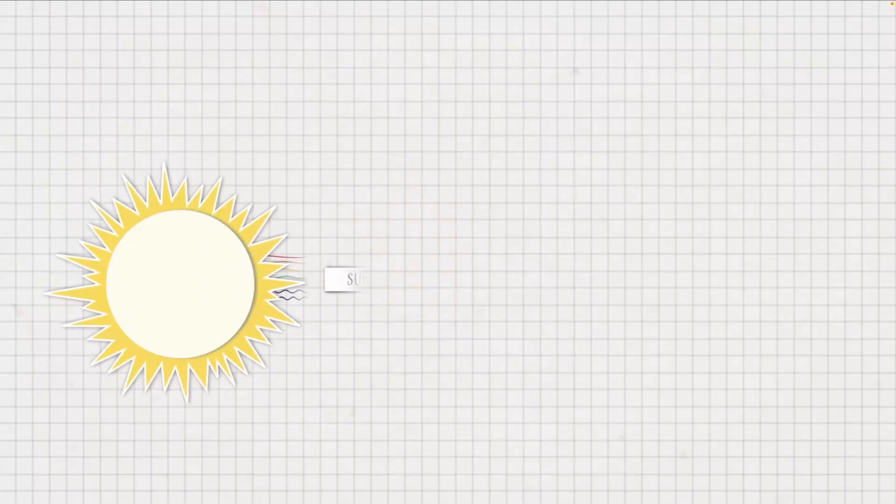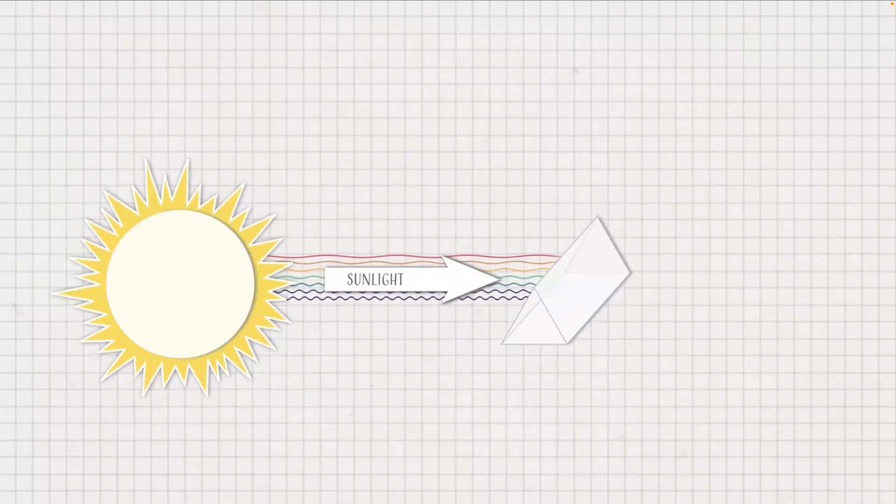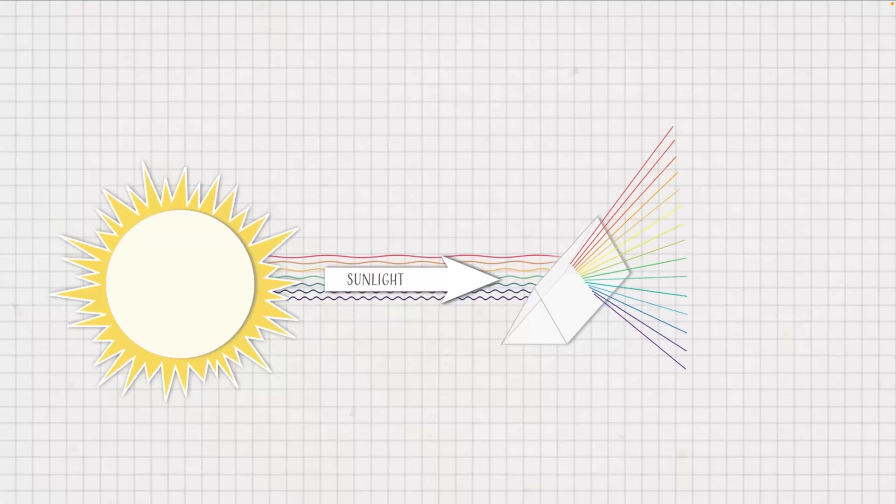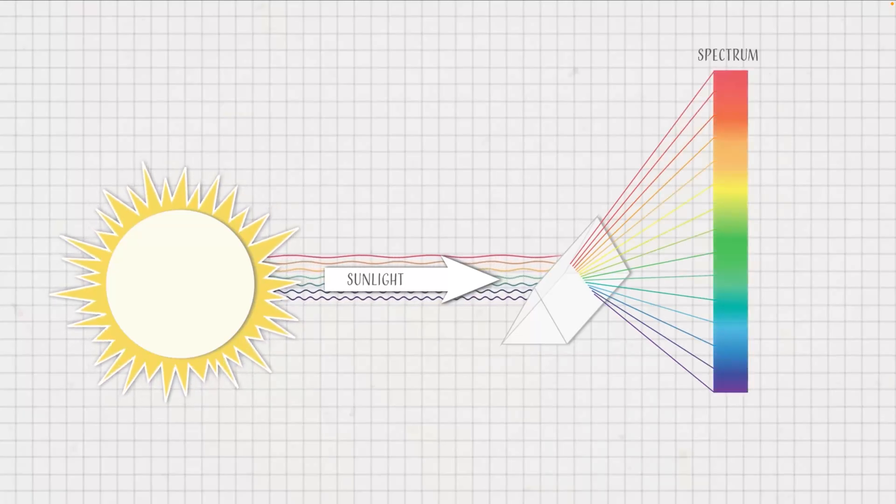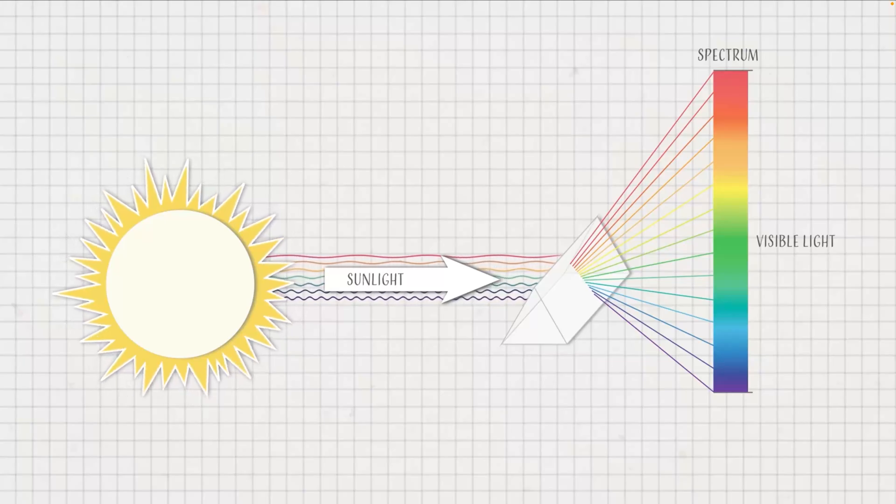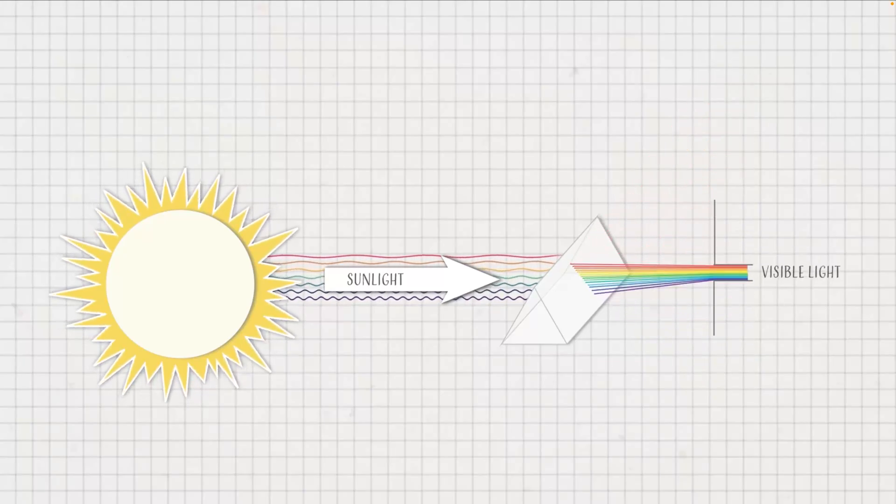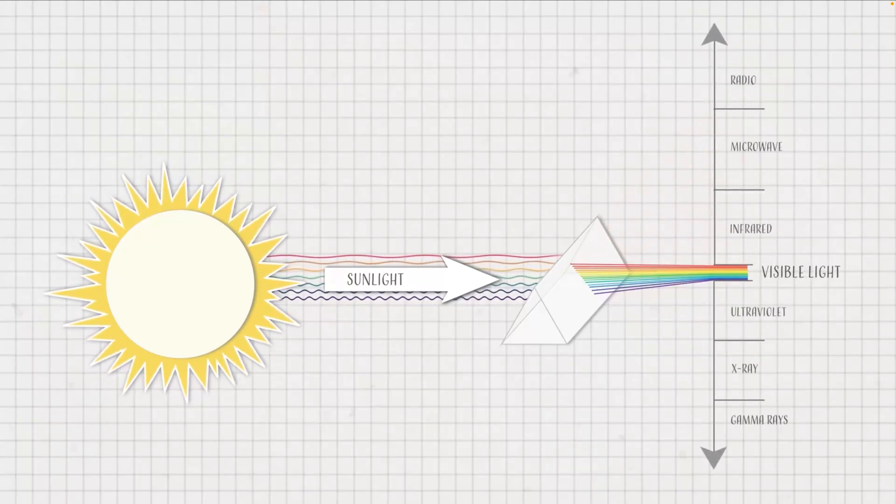That means Foremost breaks down the light it receives into the component wavelengths that make up that light. In almost all situations, the light given out by an object is made up of a load of different wavelengths or colors of light. White light is a combination of all colors. Breaking down that light tells us loads of scientific information about the object that emitted that light.